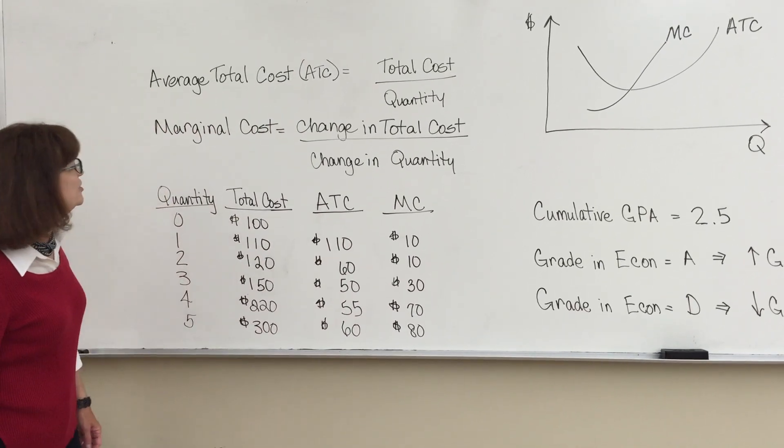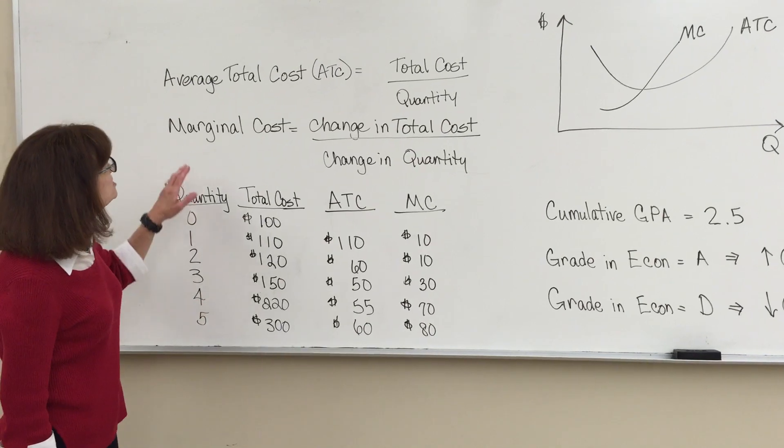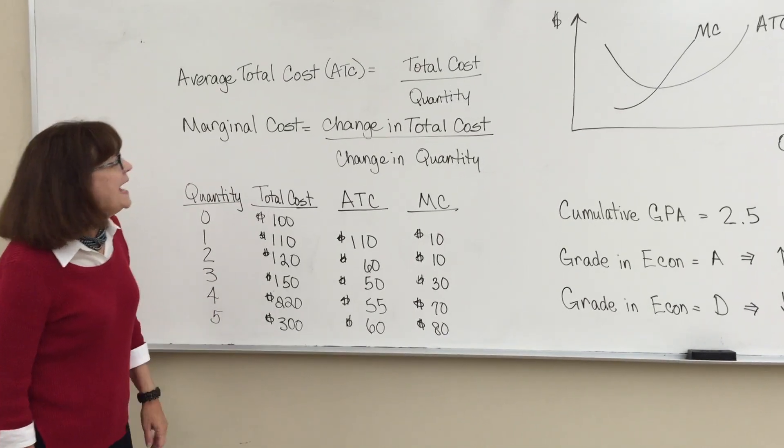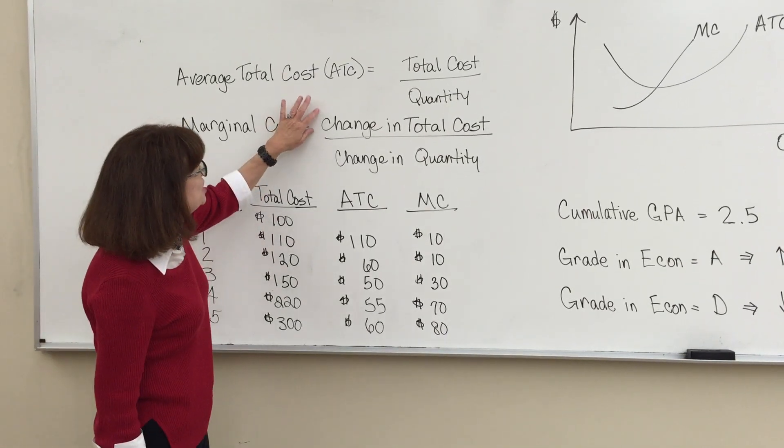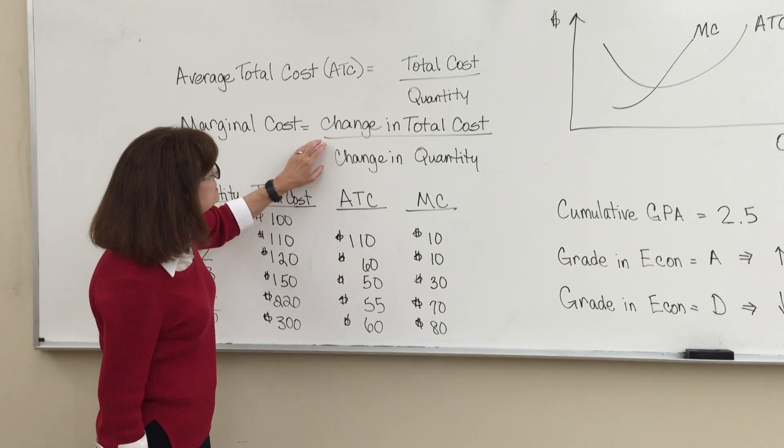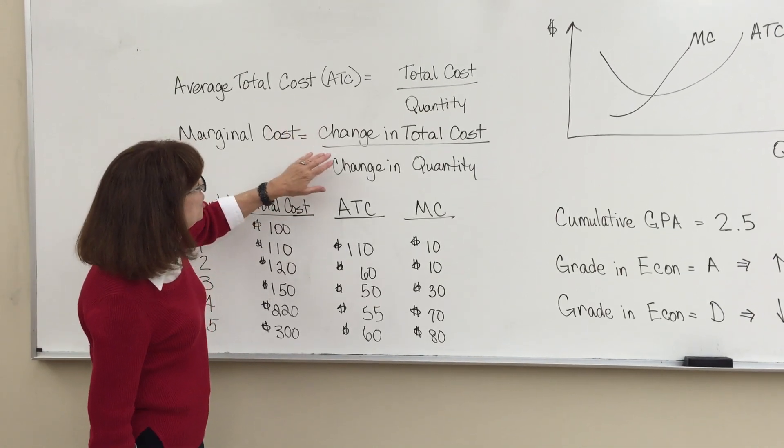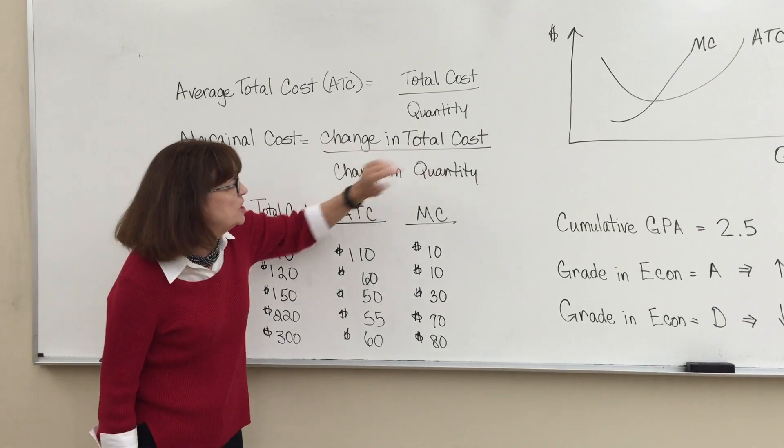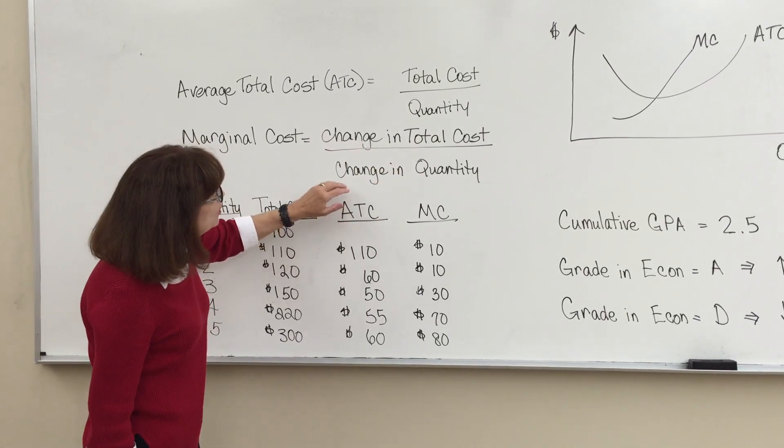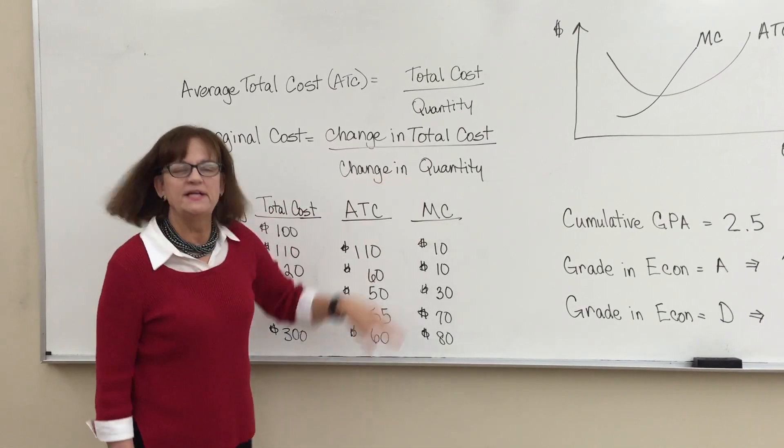Another important number for you to know if you run a business is your marginal cost. How does your total cost change when you produce another unit? So the marginal cost is the change in total cost that occurs when you change the quantity produced.